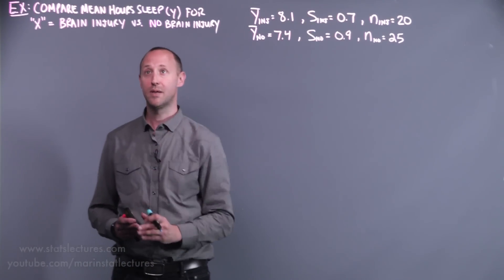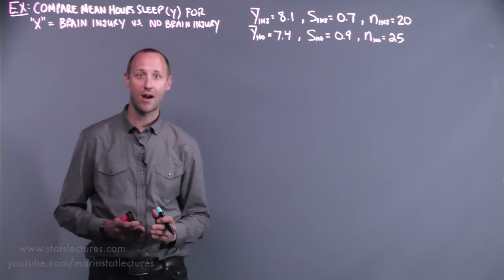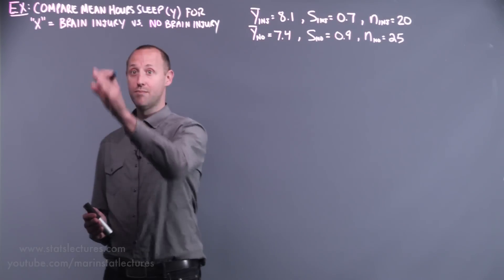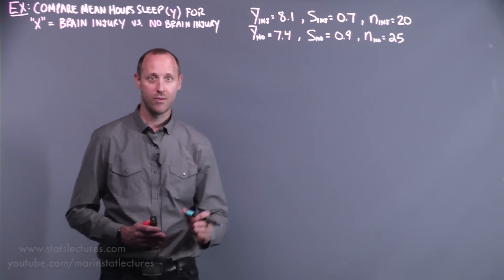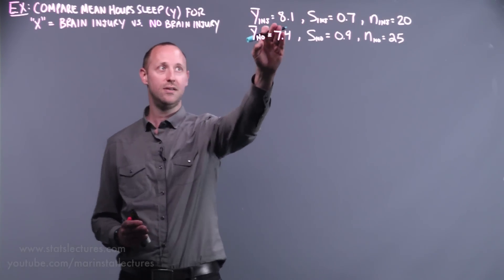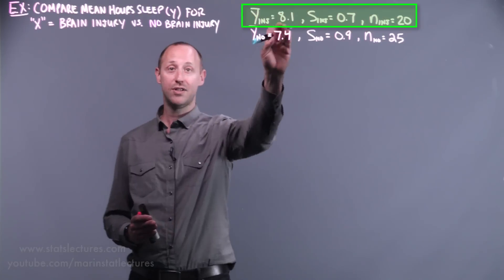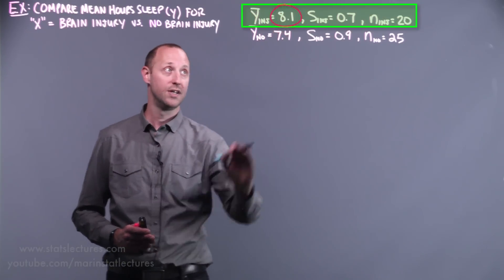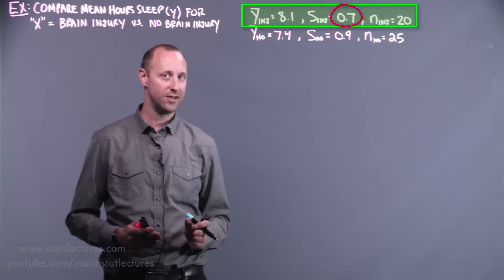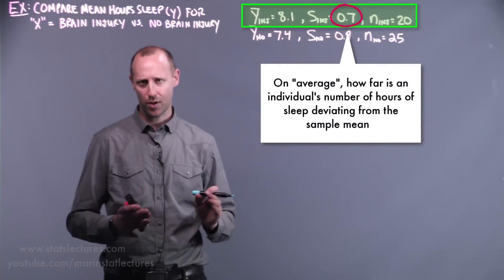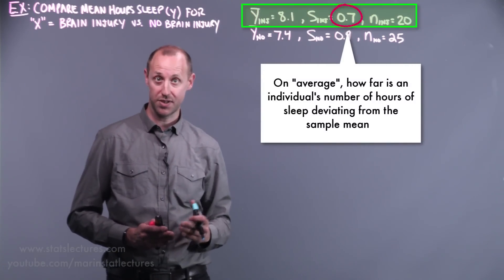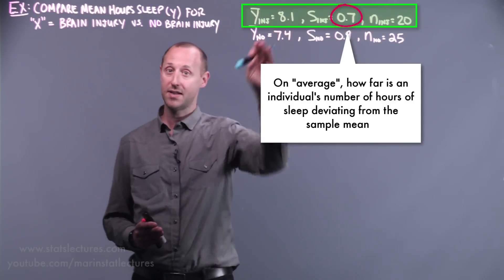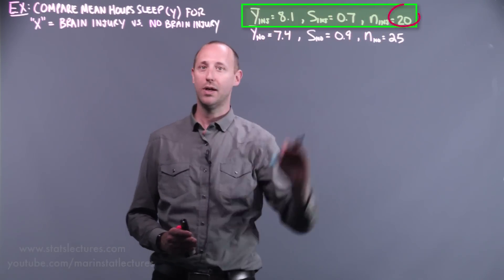The example we're going to look at here is comparing the mean or average number of hours sleep for people who had a brain injury within the past year and people who haven't. We have the summary statistics here. The brain injury group on average is sleeping 8.1 hours, standard deviation of 0.07. This tells us on average how far an individual's number of hours sleep moves from that sample mean. We've got 20 people in that group.